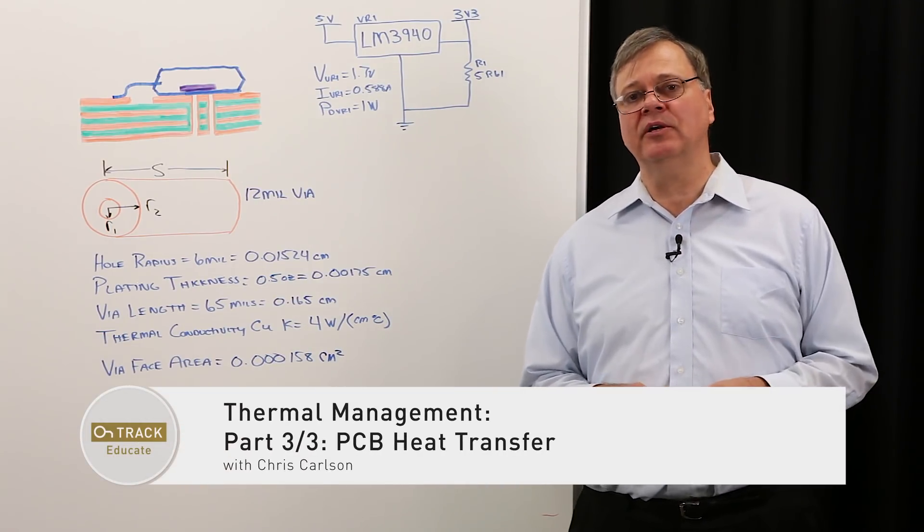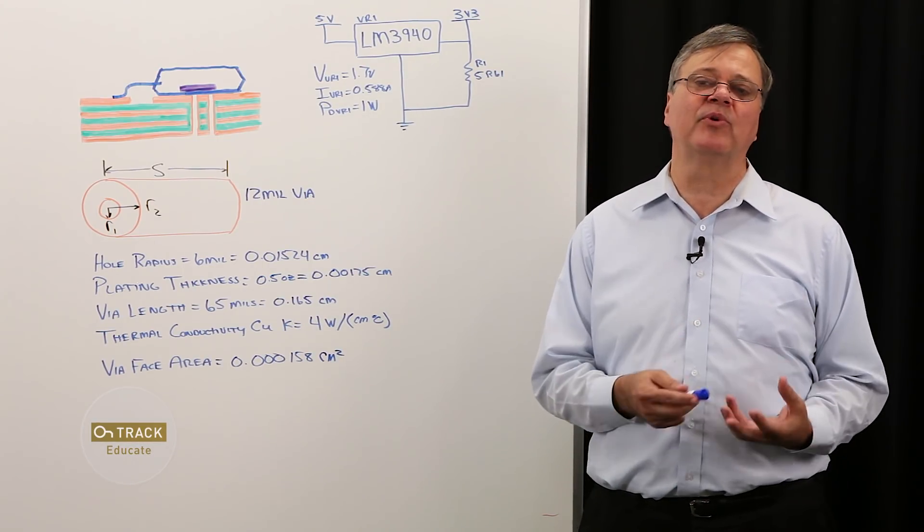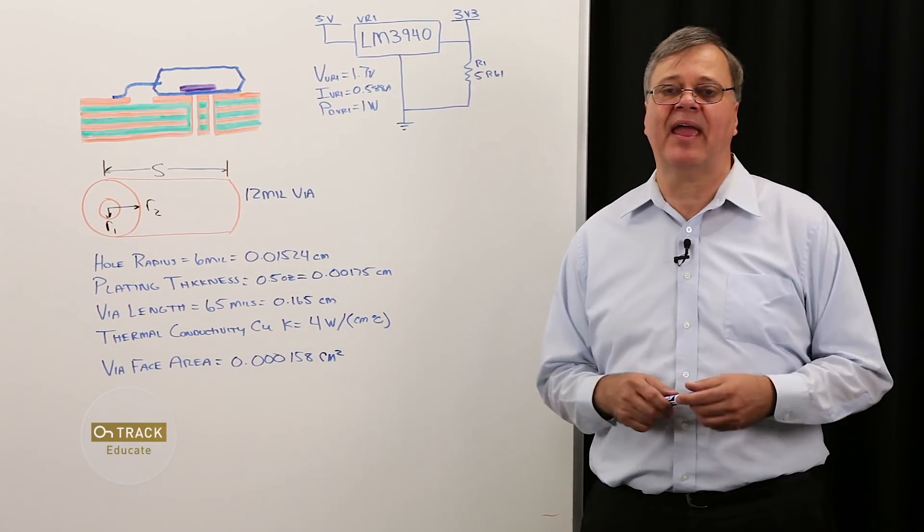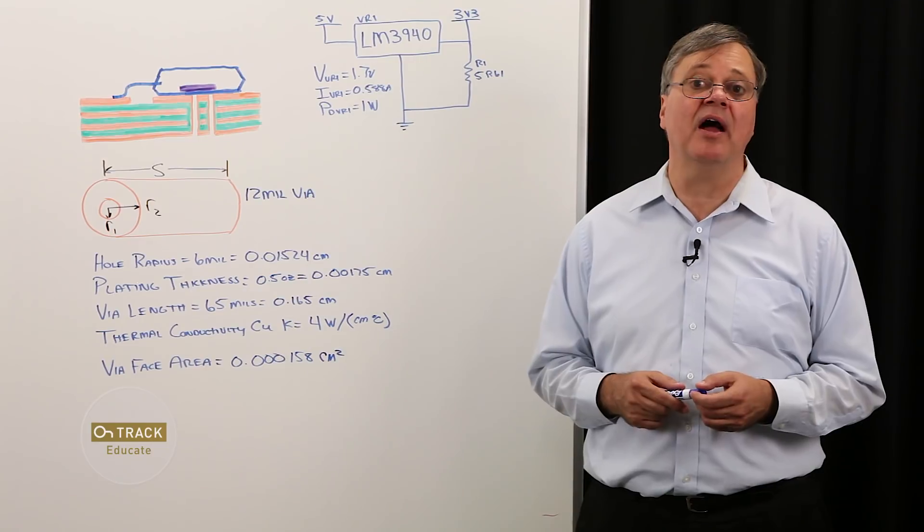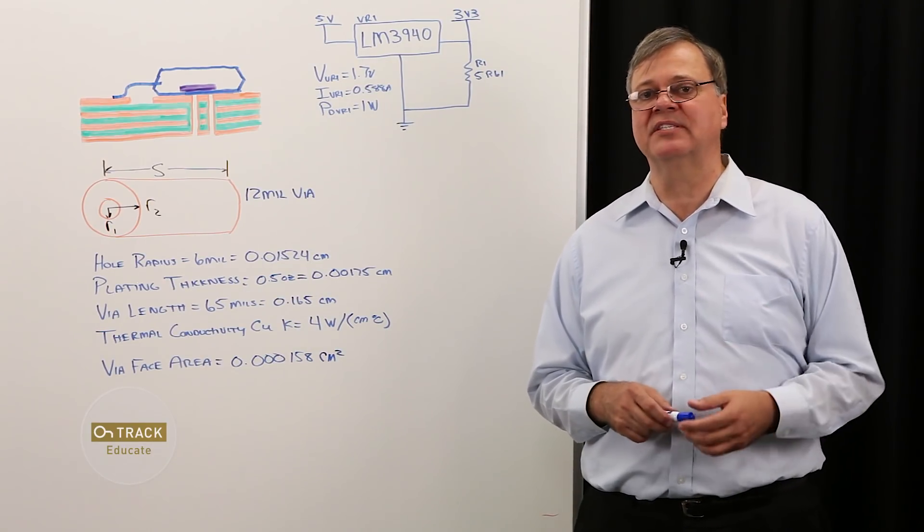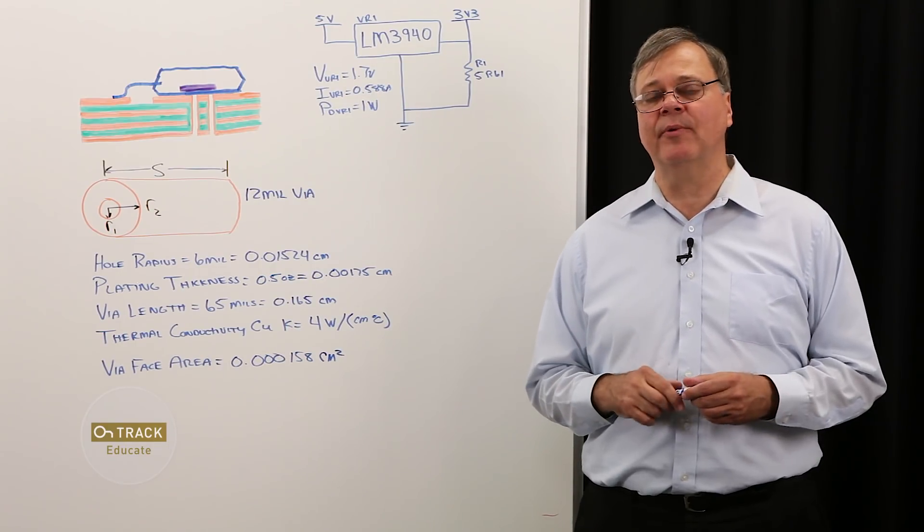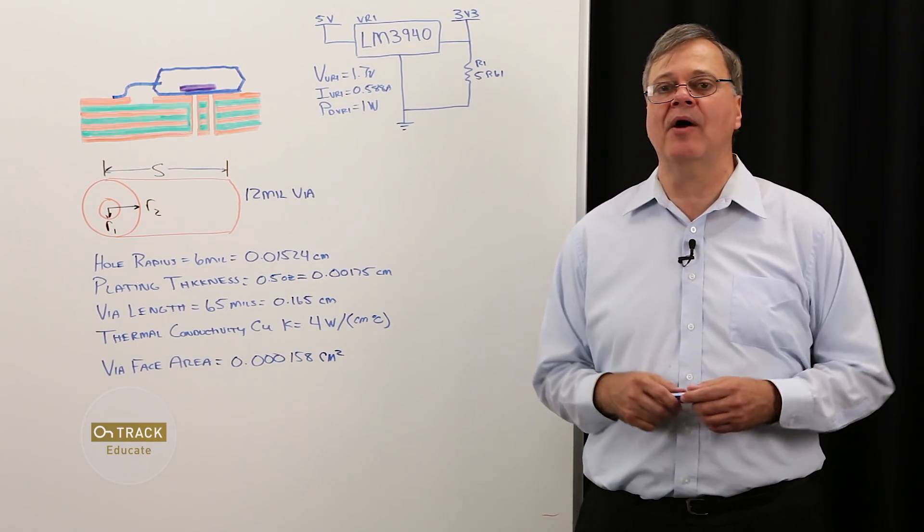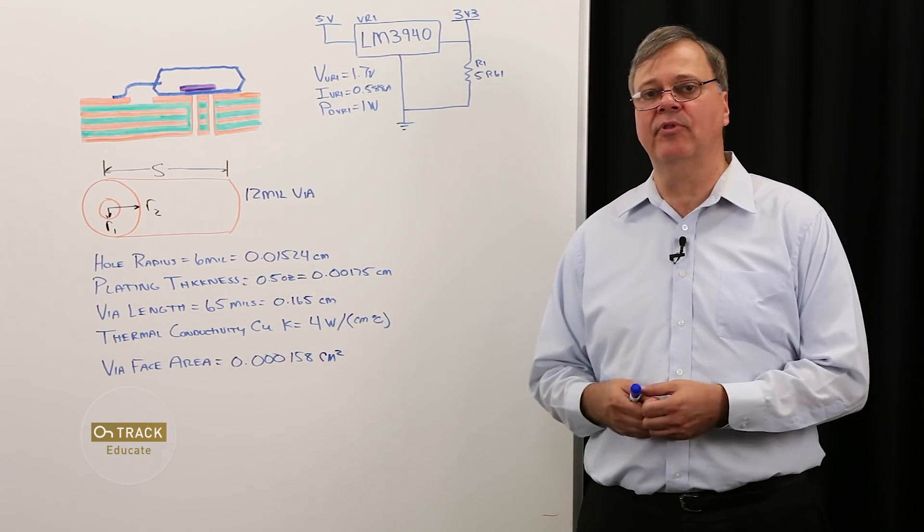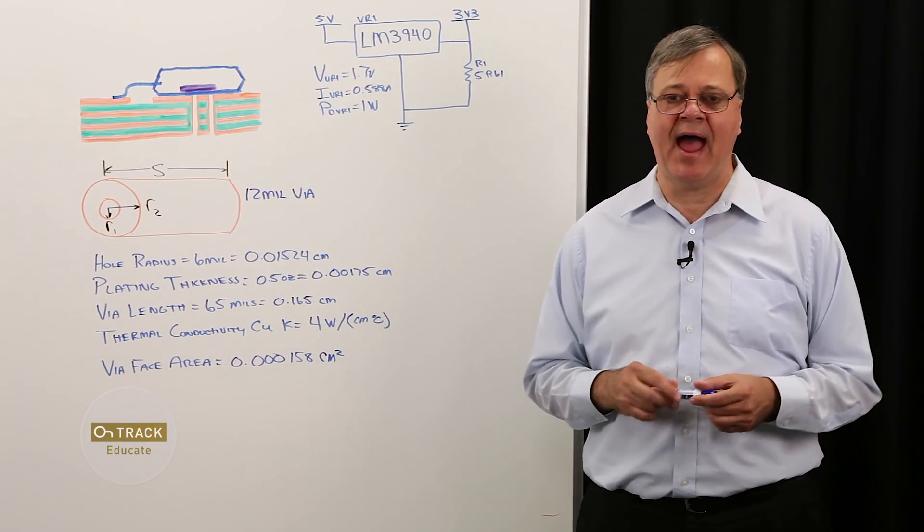This is the third installment on our thermal management series. In episode one, we looked at heat transfer and developed the concept of thermal resistance, which is very useful in calculating the rise above ambient temperature of all the components in our design. In episode two, we looked at a practical example where we properly sized a heat sink for a component. Now in episode three, we're going to talk about components that are mounted directly on the board, how the heat transfers through the board, how it's dissipated, and what are some other options that we have.